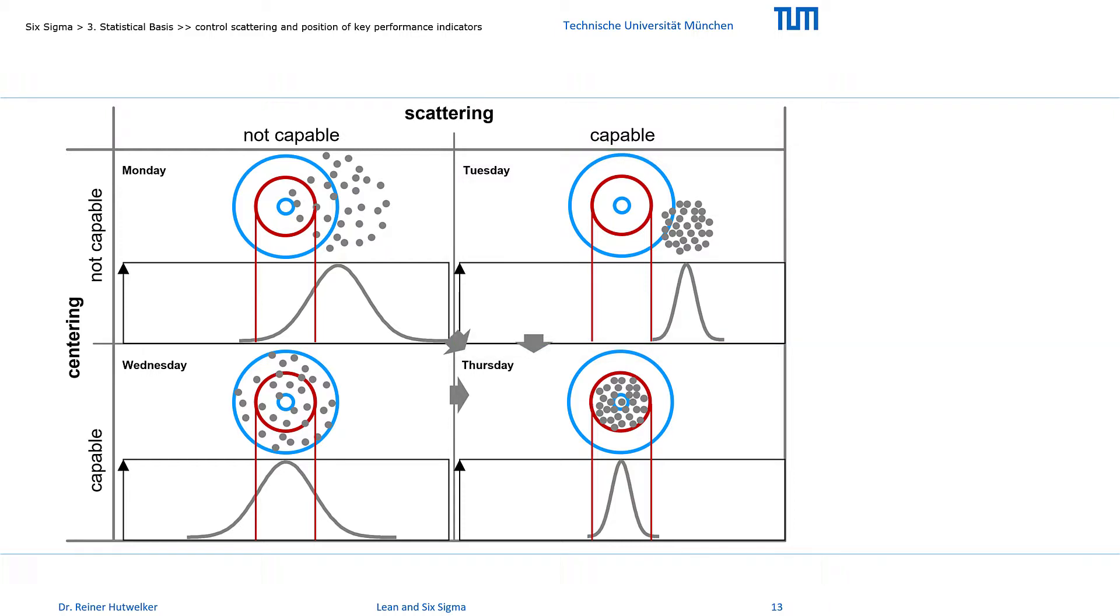If we have no idea, which influences were responsible for the position shift on Tuesday, or the scattering on Wednesday, then we would have to assume our shifts in scattering are typically caused. If we are lucky, then the position shift is caused by exactly one systematic influence. Once we have identified this influence, we can correct the process quickly and with little effort.